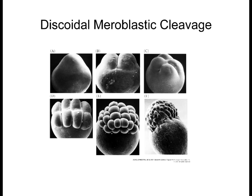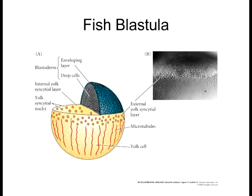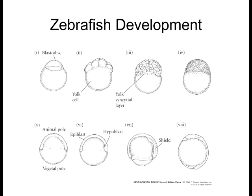This is discoidal meroblastic cleavage — meroblastic because it does not include the entire embryo. The yolk area below does not undergo cleavage at all; all cleavage occurs right on top of the yolk. This doesn't mean there are no nuclei in the yolk area. In fact, that's a critical part of gastrulation: there are syncytial nuclei that do not get sequestered initially into cells. These nuclei within the yolk area don't actually form into various blastomeres.